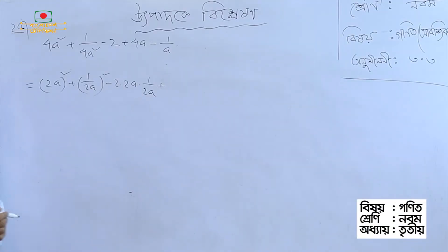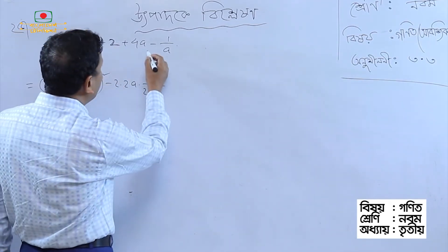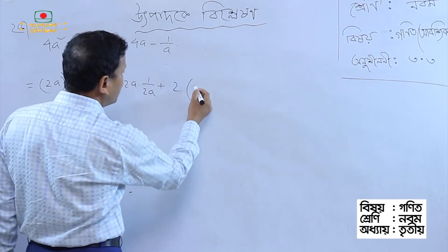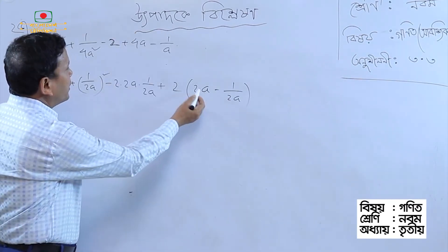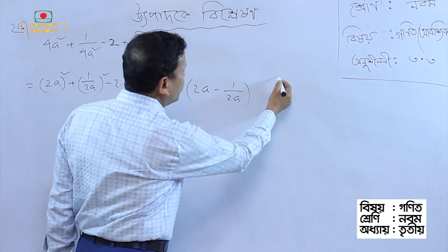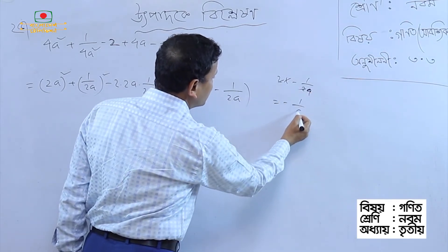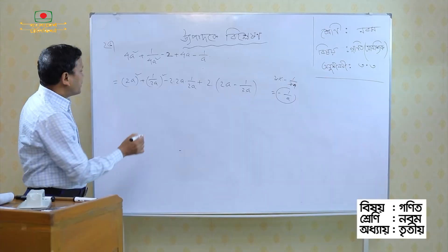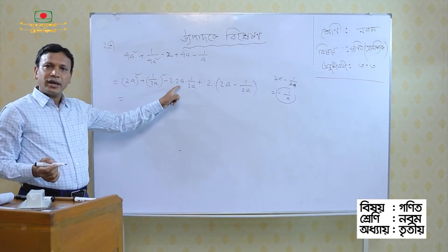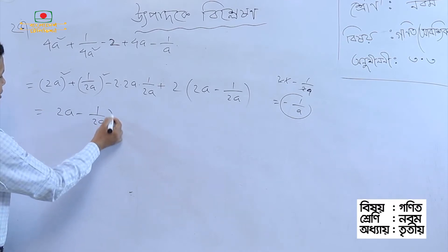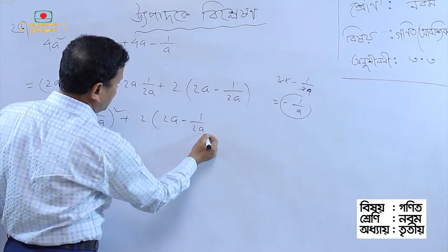This 2ab, which I will write as 2a — this is not quite right. The last term: we have 2a minus 1 by 2a. That means 2a minus 1 by 2a gives us a minus 1 by a. So this gives us a squared plus b squared minus 2ab, which I will write as a minus b whole squared, plus 2 times 2a minus 1 by 2a.